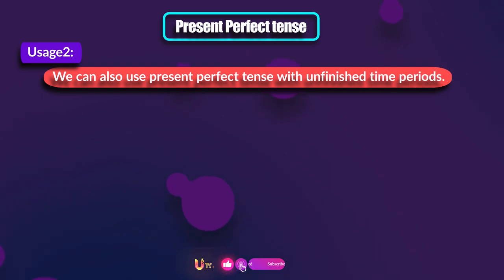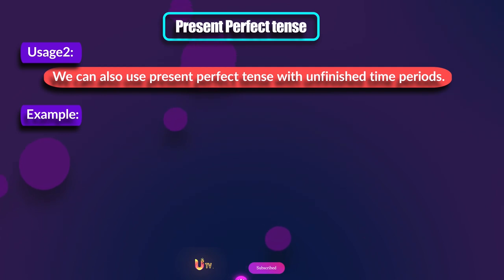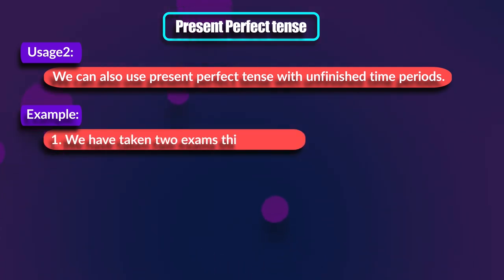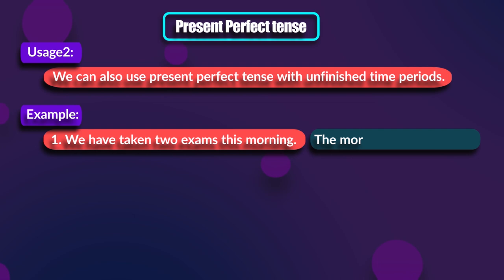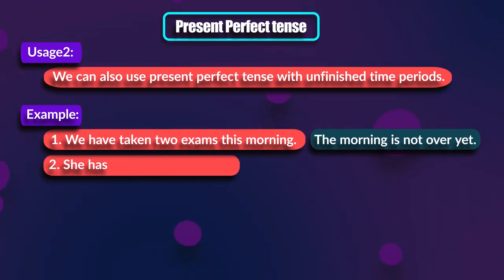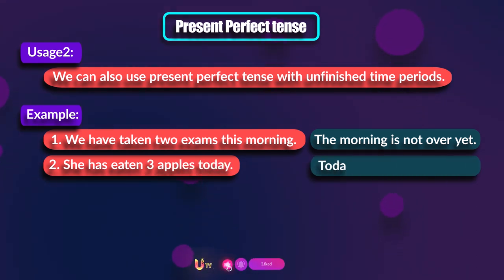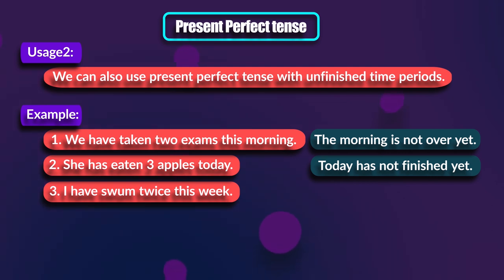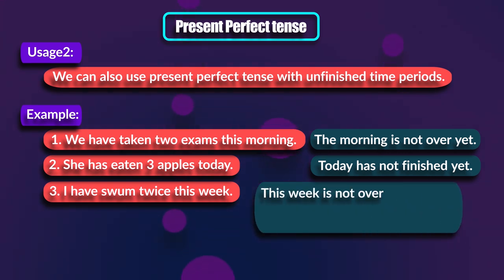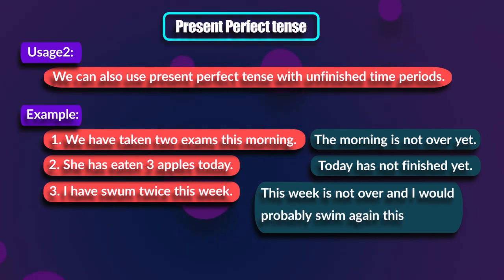Moving to the second usage, we can also use present perfect tense with unfinished time periods. For example: We have taken two exams this morning — the morning is not over yet. She has eaten three apples today — today has not finished yet. I have swum twice this week — this week is not over, and I would probably swim again this week.